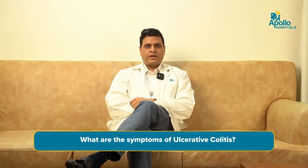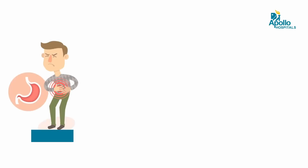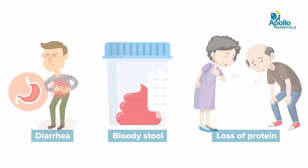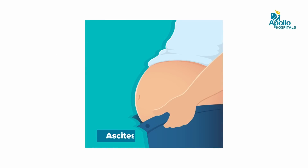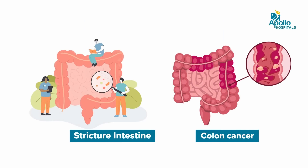What are the symptoms and how is it detected? Symptoms of ulcerative colitis — as it is a chronic inflammatory bowel disease where the inflammation occurs in the mucosa of the large intestine — include watery diarrhea, bloody stools, loss of protein, weight loss, malnutrition, swelling of the feet, and sometimes ascites. If left untreated, the patient may develop strictures or cancer of the large intestine.